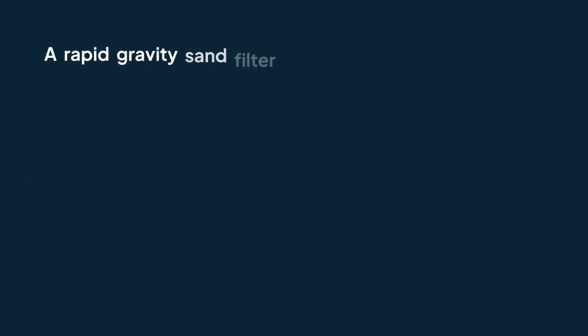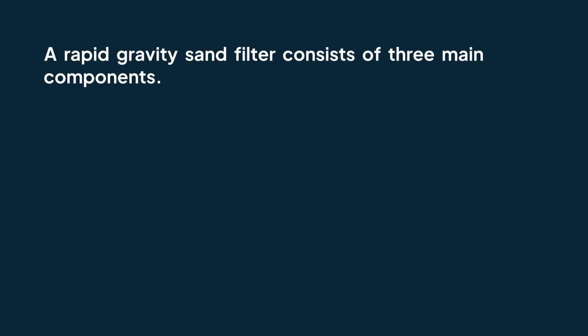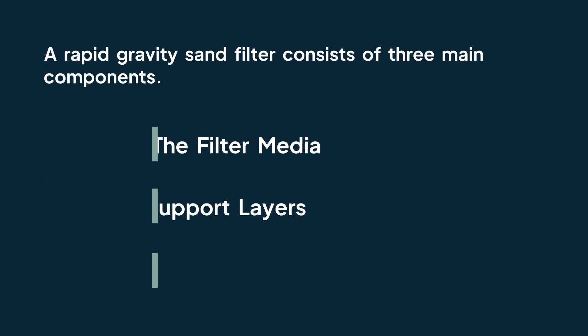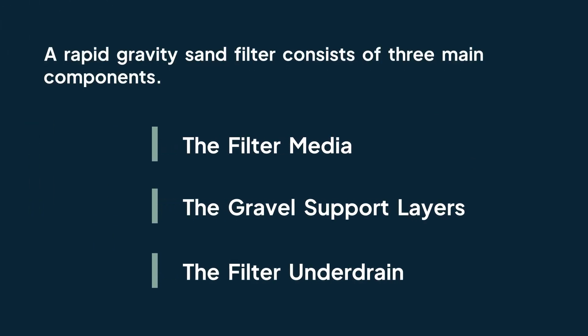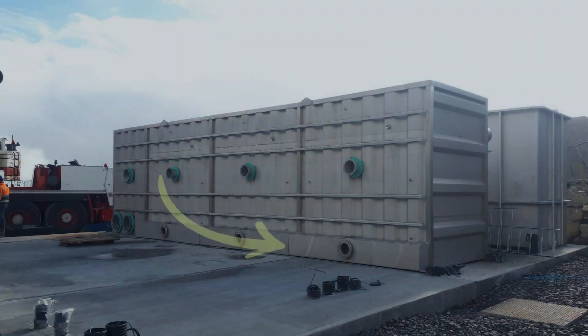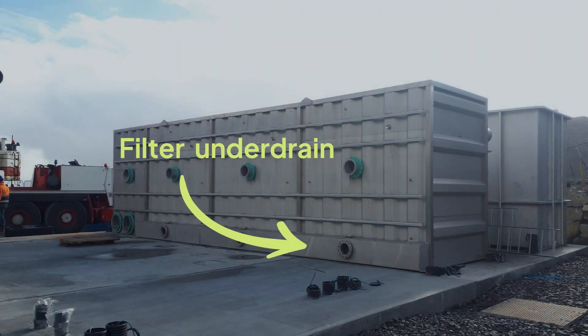What parts make a rapid gravity filter? The rapid gravity sand filter consists of three main components: the filter media, gravel support layers, and the filter under drain. The under drain plays a crucial role by supporting the filter medium and gravel evenly, and collecting the filtered water from the filter's bottom.